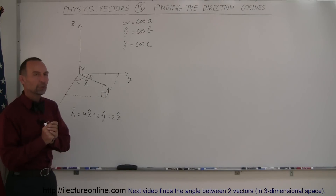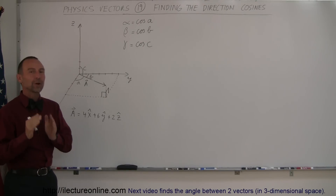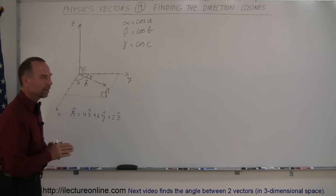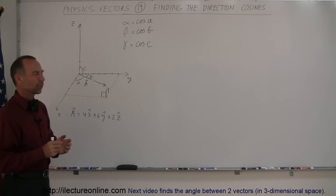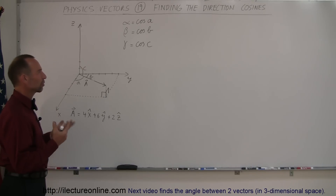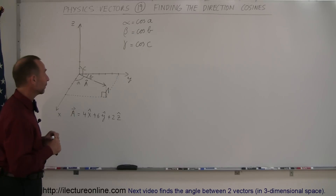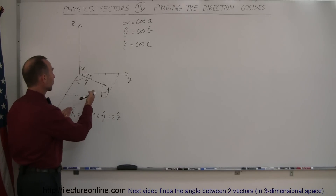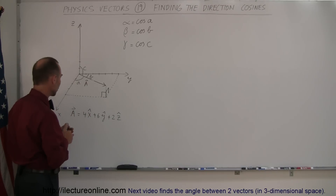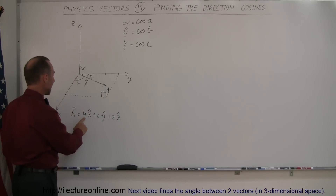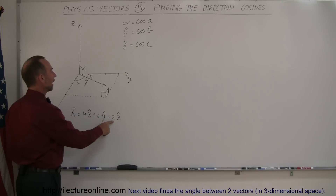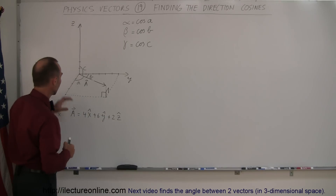In this video, we're going to learn how to find the direction cosines of a vector. You might ask, what are the direction cosines of a vector? Well, let's say we have this arbitrary vector, vector A. Notice that vector A has a magnitude of 4 units in the x-direction, 6 units in the y-direction, and 2 units in the z-direction.